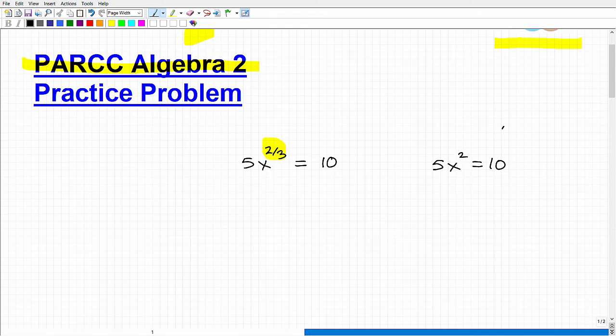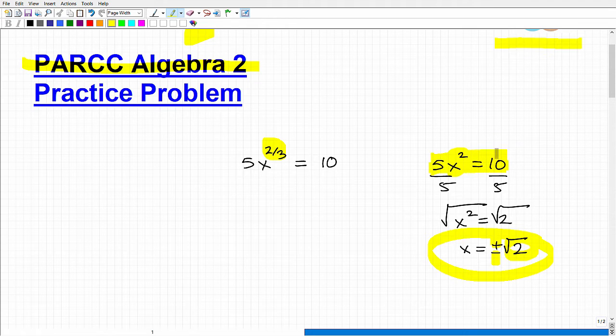Hopefully, you recognize this as a quadratic equation. So the way we would solve that, let's actually do this real quick. We would divide both sides of the equation by 5, and we have x squared equals 2. Then what would we do? Well, you'd have to take the square root of both sides, so x equals positive, negative square root of 2.